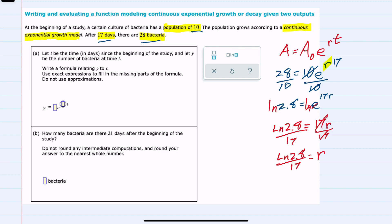Now we can write the formula for part A: y equals 10 times e raised to ln(2.8) over 17, times t.